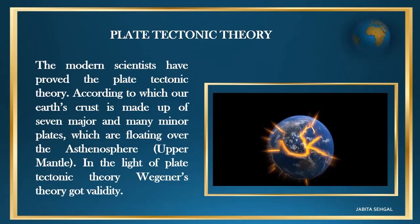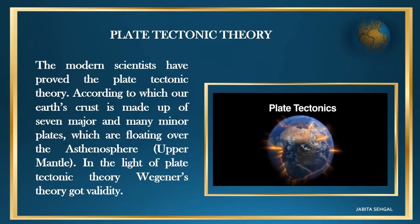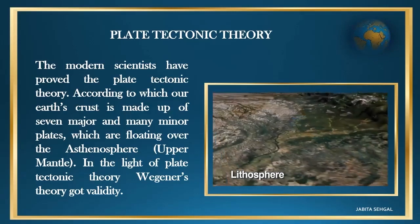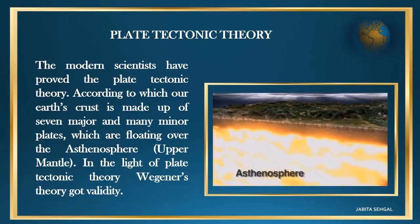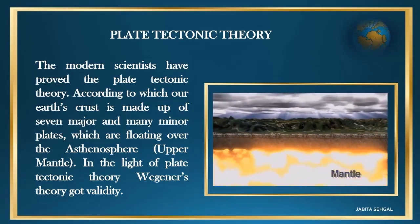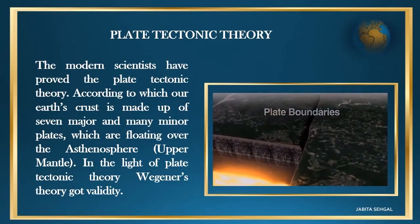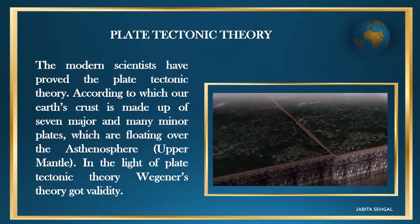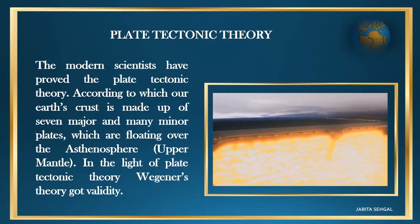Last but not the least is plate tectonic theory. In 1960, about 30 years after Wegener's death, modern scientists proved the plate tectonic theory, according to which Earth's crust is made up of seven major and many minor plates floating over a semi-liquid surface called the asthenosphere or upper mantle. In the light of this plate tectonic theory, Wegener's theory got validity and his continental drift theory was approved by scientists.